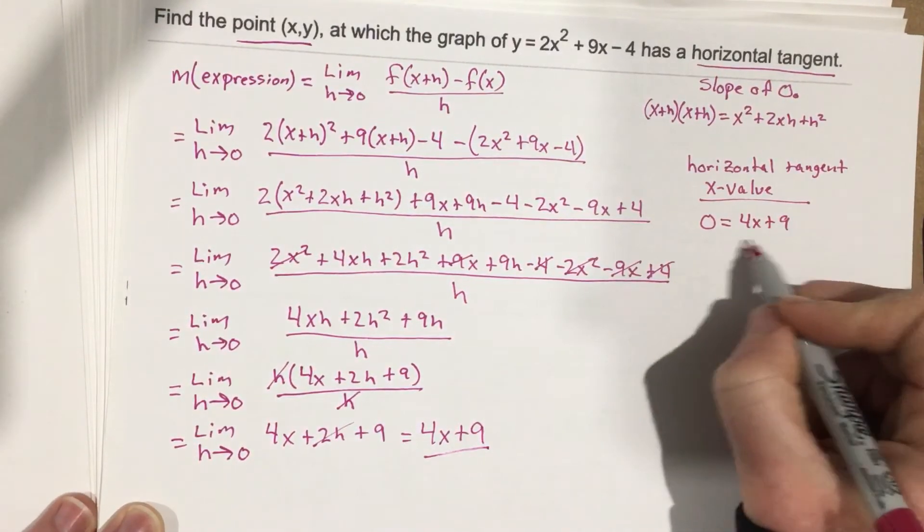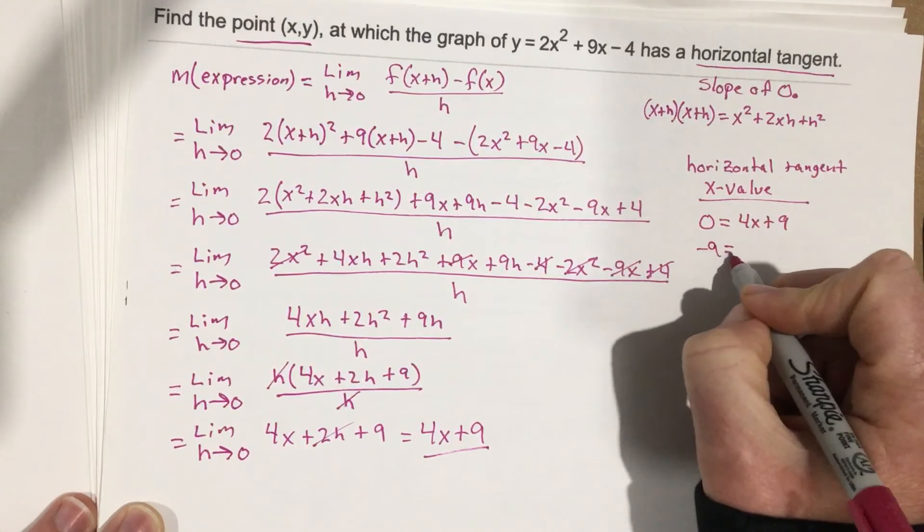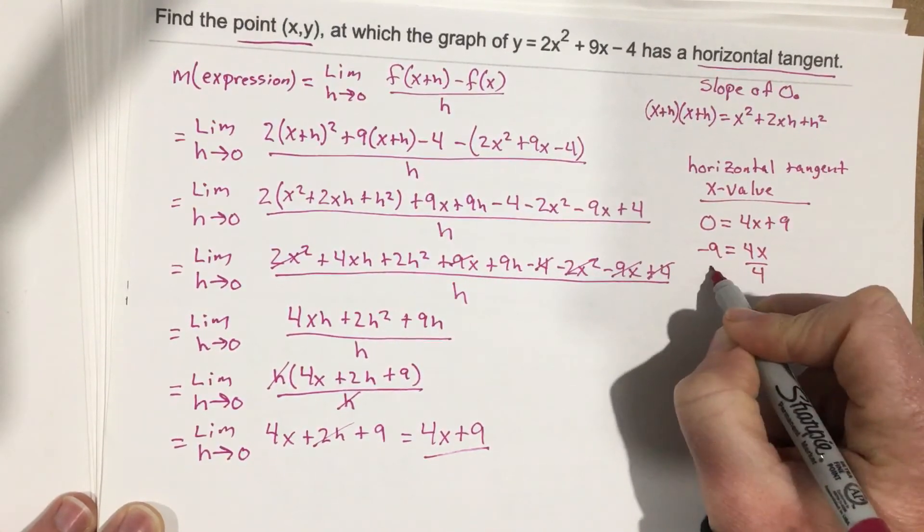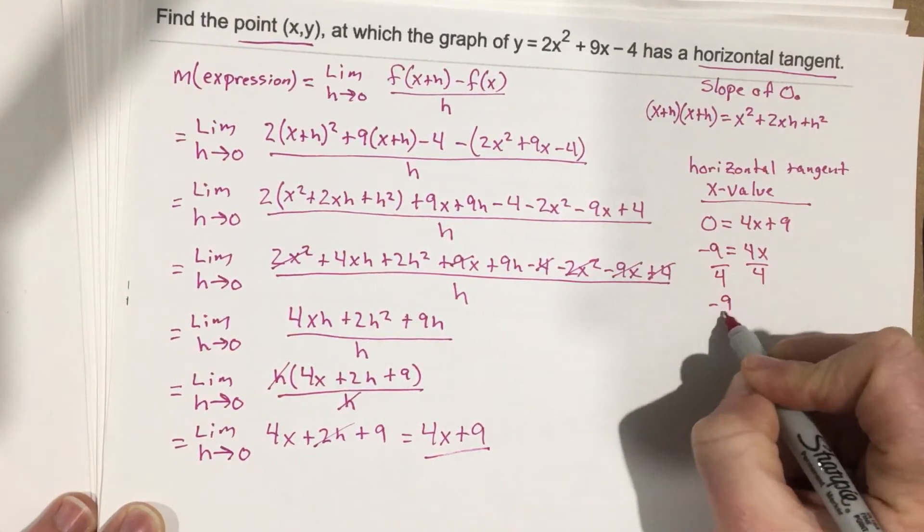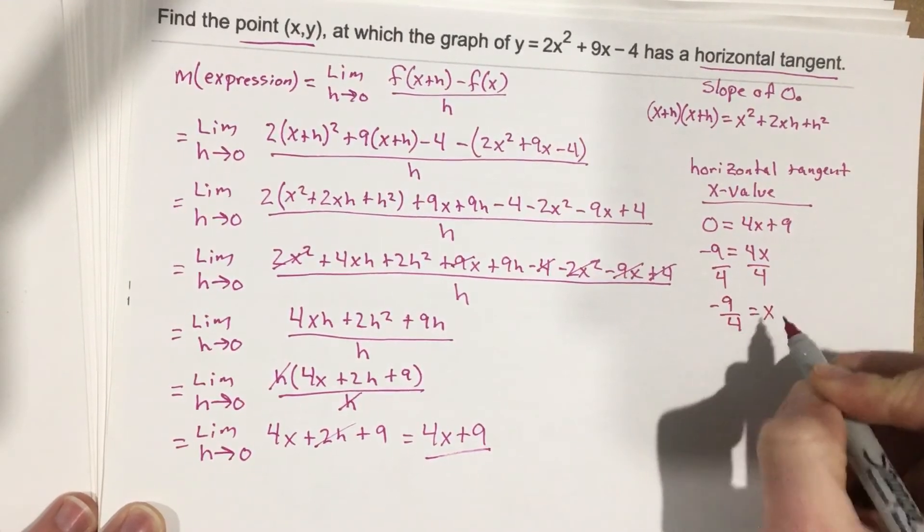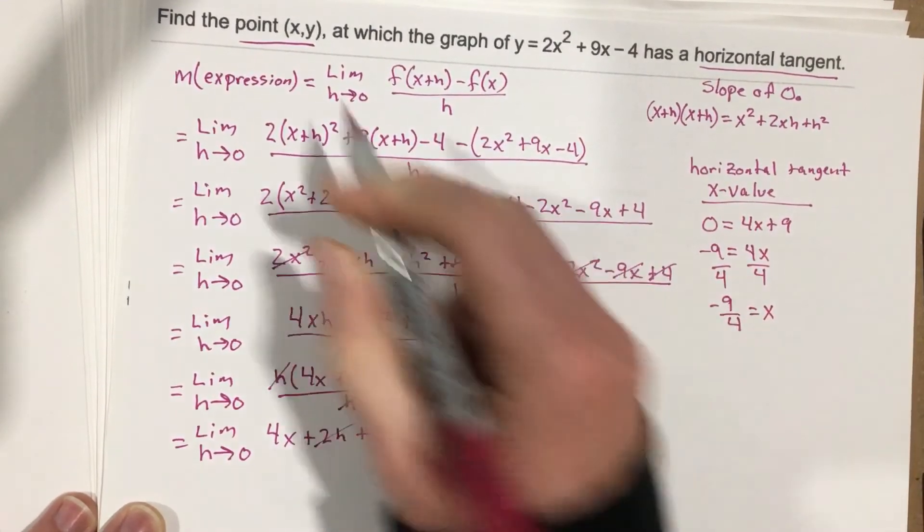We subtract 9 over, so we get negative 9 equals 4x, divide by 4, negative 9 over 4 is x. So this is the x value of this coordinate.